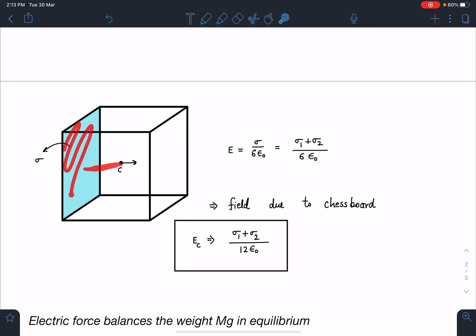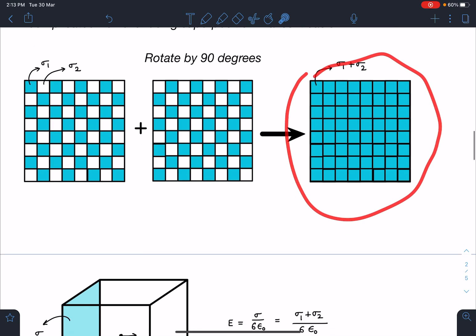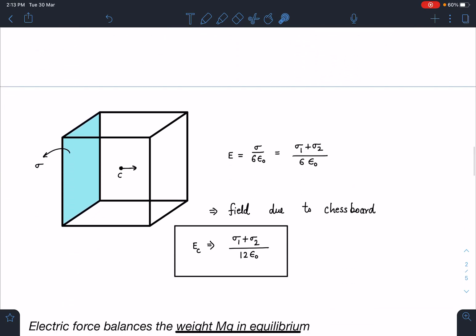Using the solid angle concept, directly I can write this is going to be σ/(6ε₀) at the center due to one of the faces. Now σ of this combined one is σ₁ + σ₂, which is uniform. So now field at the center is going to be (σ₁ + σ₂)/(6ε₀).